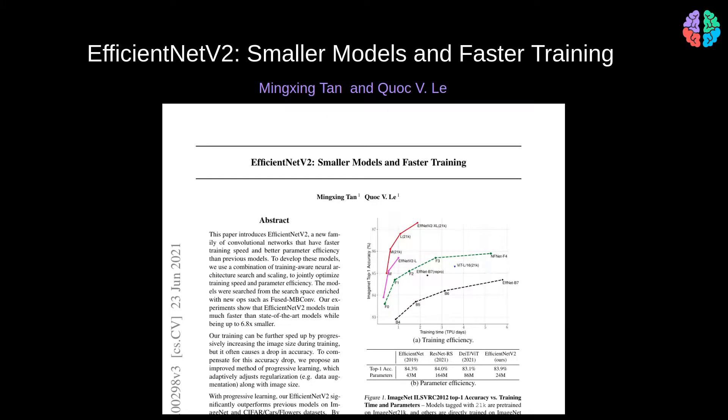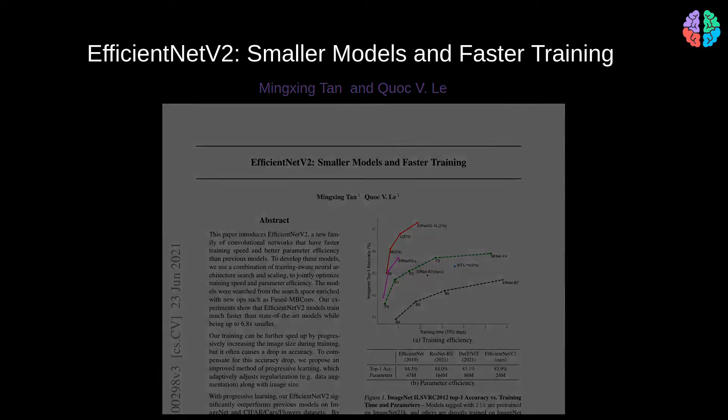What excites me about this paper is that it is a follow-on paper for the state-of-the-art EfficientNet paper, which has been a very successful classification model for quite some time. This paper introduces training-aware neural architecture search that not just optimizes for parameters, but also for the training speed.